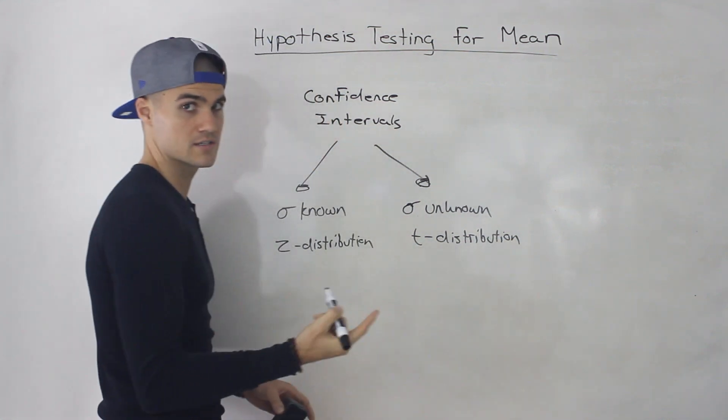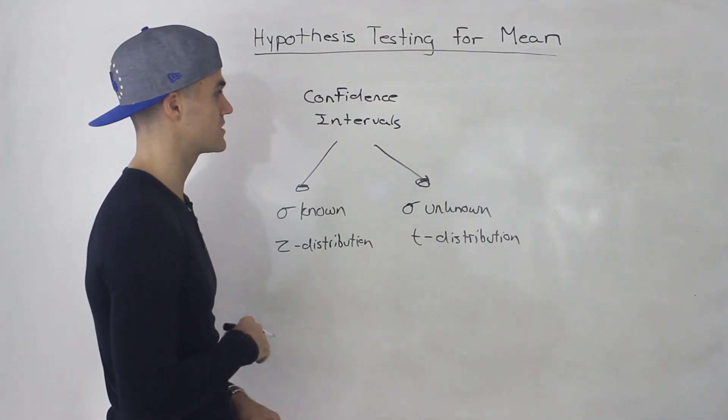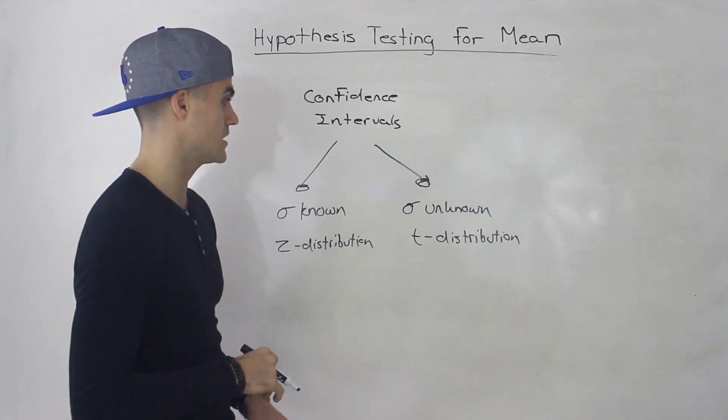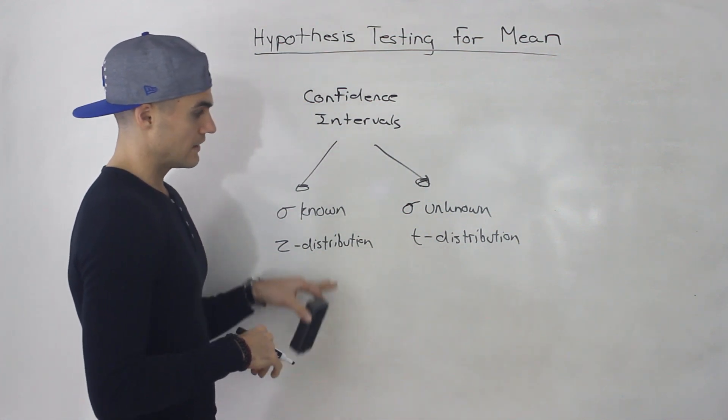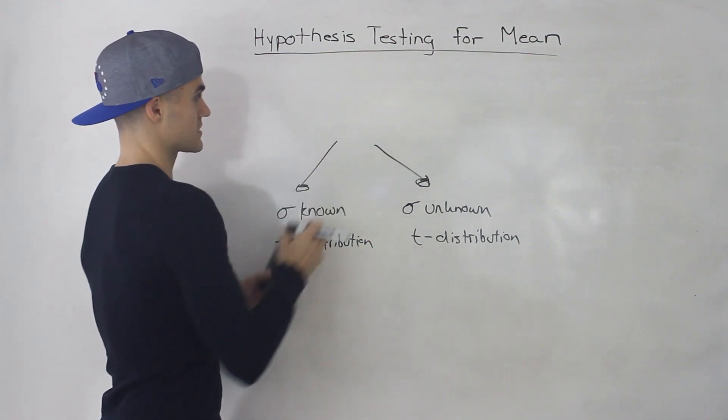Or T distributions in plural, right? Because there were different distributions for different degrees of freedom, depending on that sample size. Well, the exact same thing is actually going to happen with hypothesis testing.